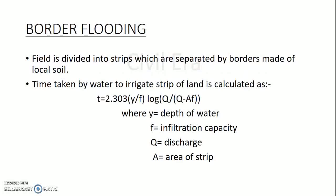The next method is border flooding. In this method the field is divided into a number of strips which are separated by borders made of local soil. The time taken by water to irrigate a strip of land is calculated as: t = 2.303 × (y / f) × log(q / (q − f)), where y is the depth of water, f is the infiltration capacity calculated in meters per second, q is the discharge in cubic meters per second, and area of strip is calculated in square meters.